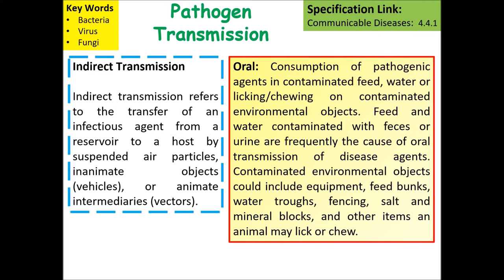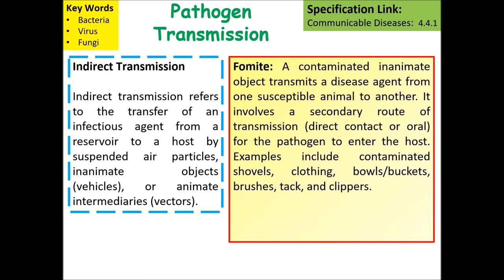Feed and water contaminated with faeces or urine are frequently the cause of oral transmission. Contaminated environmental objects include equipment, feed bunks, water troughs, fencing, salt and mineral blocks. A contaminated inanimate object that transmits a disease agent from one susceptible animal to another is referred to as a fomite.